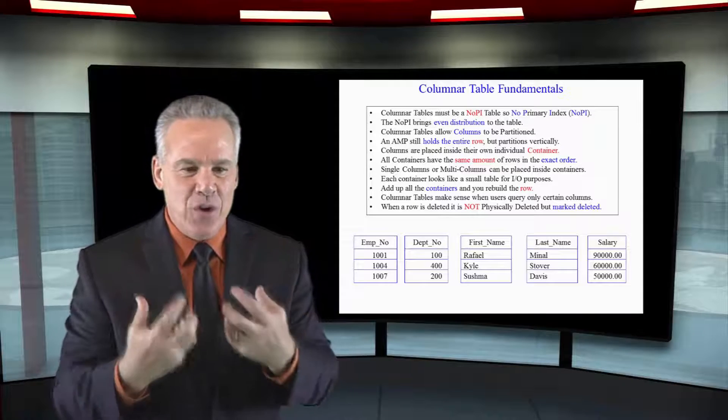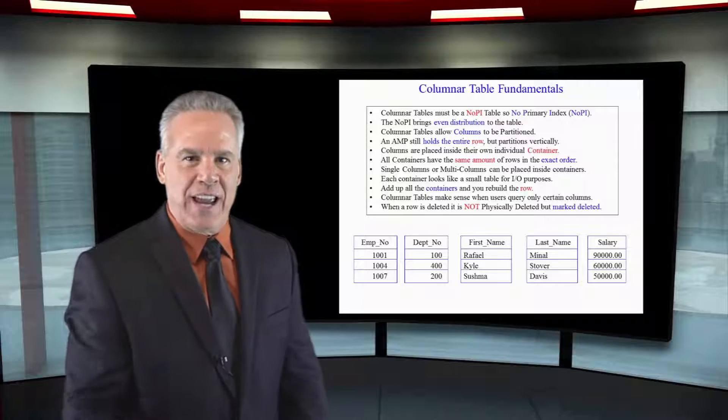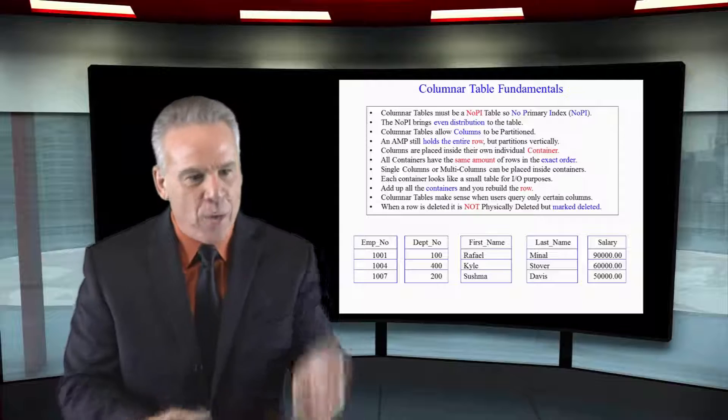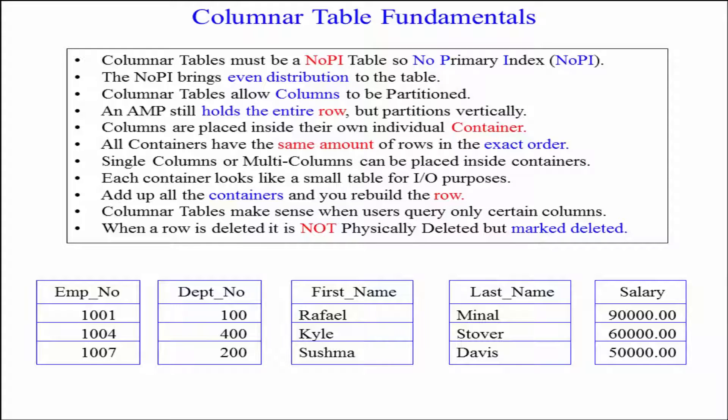You see, if you were to say select asterisk from this table, I want all columns, they go, oh no, we shouldn't have a columnar design. We got to individually bring in each one of these things, and it makes it more difficult.